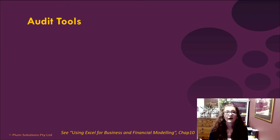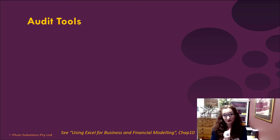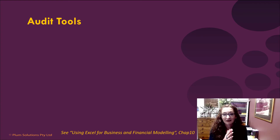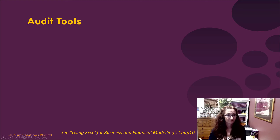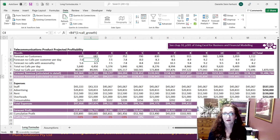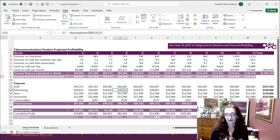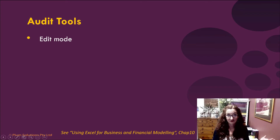Now let's look at some of the audit tools. When inheriting a model, you need to come to grips with the layout, design, formatting, assumptions, and formulas — and following the formula calculations is the most difficult part. The fastest way to understand a formula when you see it for the first time is to go into edit mode by double-clicking or pressing F2. That's probably the easiest way to audit a formula.